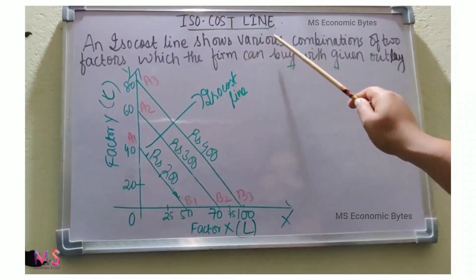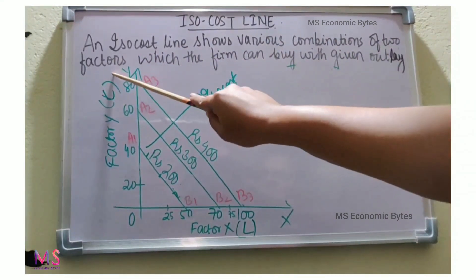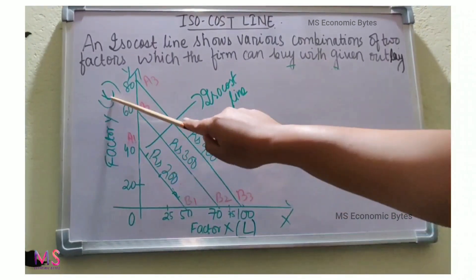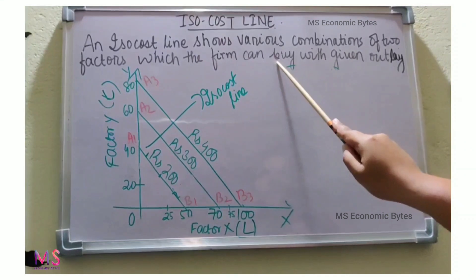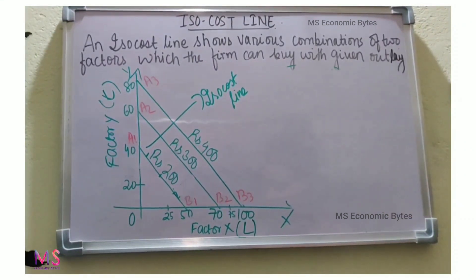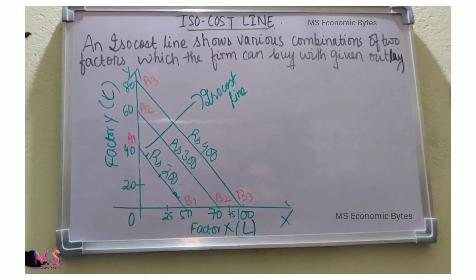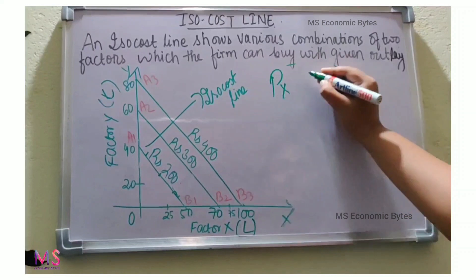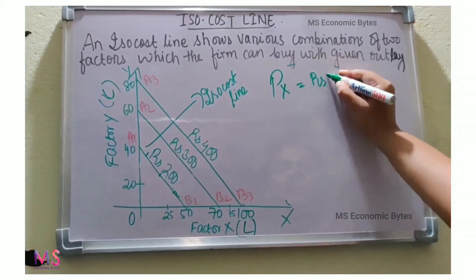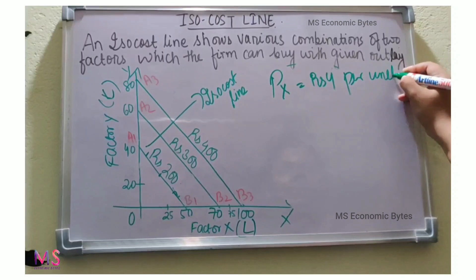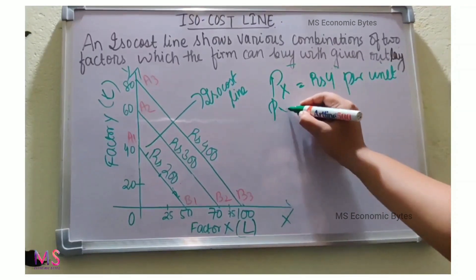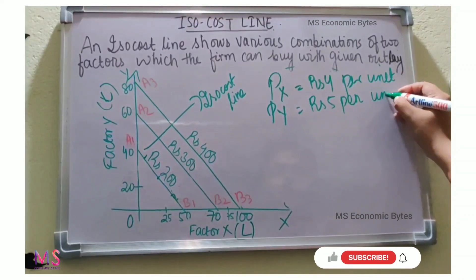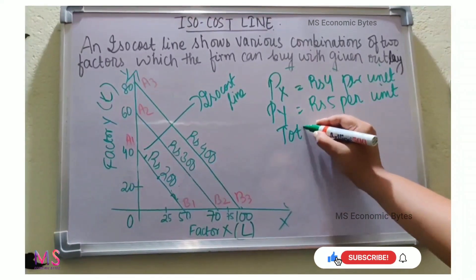An isocost line shows various combinations of two factors — Factor X and Factor Y. We have taken Factor X as labor and Factor Y as capital, which the firm can buy with a given outlay. The price of Factor X is given as ₹4 per unit, the price of Factor Y is given as ₹5 per unit, and the total outlay of the firm is ₹200.